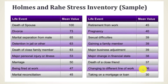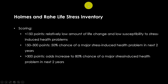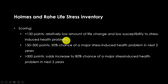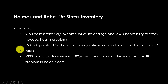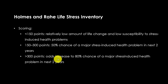You do not need to remember everything on the list — all you need to know is that death of a spouse has the greatest stress according to the Holmes and Rahe stress inventory scale. The scale is scored such that if you score less than 150 points, you have a relatively low amount of life change and low susceptibility to stress-induced health problems. The higher the number, the greater the stress. Anywhere between 150 to 300, you have a 50% chance of a major stress-induced health problem in the next few years. The higher the number, the greater the stress level and the greater your risk of having a health problem.